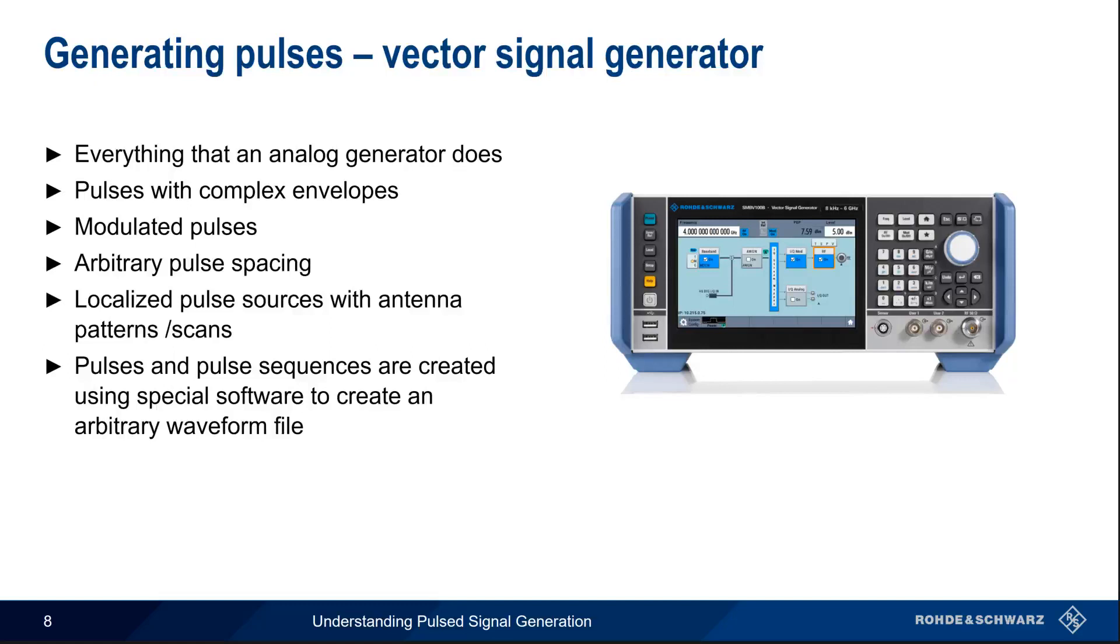Another way that pulses can be created using a vector signal generator is using something called pulse descriptor words, which are short lists of parameters that define the main features of a pulse. If you're interested in learning more about some of these advanced topics, please refer to the separate presentations for each one of these topics.